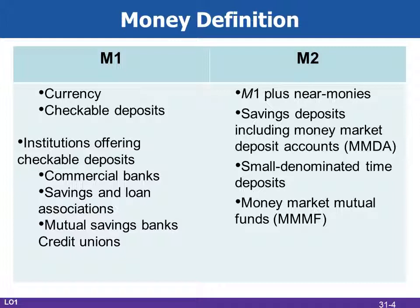As for checkable deposits — most significant purchases take place with a check, not cash, for obvious reasons: it's much safer and there's a record of payment. Nowadays we're writing fewer and fewer actual checks. Most transfers of money simply involve a computer entry — I receive my paycheck via direct deposit, my mortgage is a direct withdrawal, my car payments are direct withdrawal, and I pay all my bills online. Technically it's still the same idea of transferring money from a checking account into another account. That's M1, your most narrow definition of money.